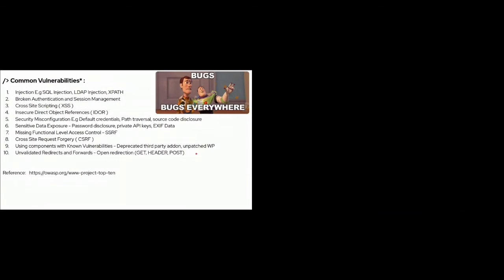These are some of the common vulnerabilities to look for in your project or website. I have listed 10 loopholes across different categories: injection, broken authentication, session management, cross-site scripting, and IDOR (insecure direct object references). If you want to know more about these vulnerabilities, you can refer to owasp.org — you will find information about each category and what kinds of vulnerabilities fall under each. At the end of this presentation, I have demonstrated a few of them.